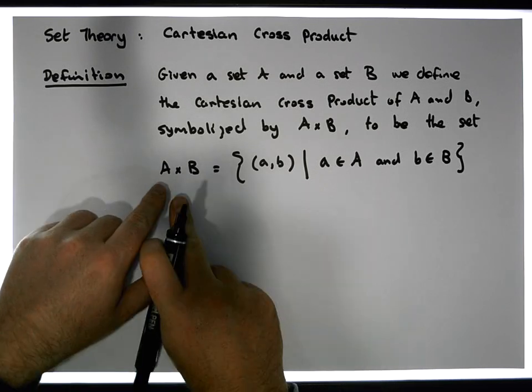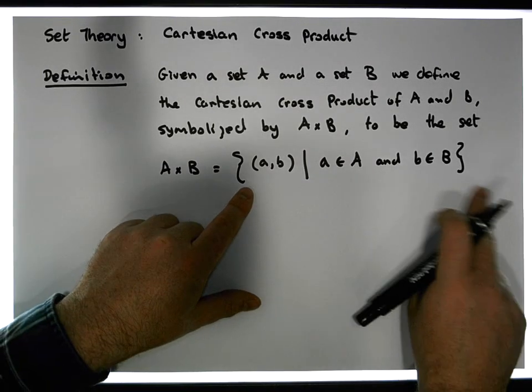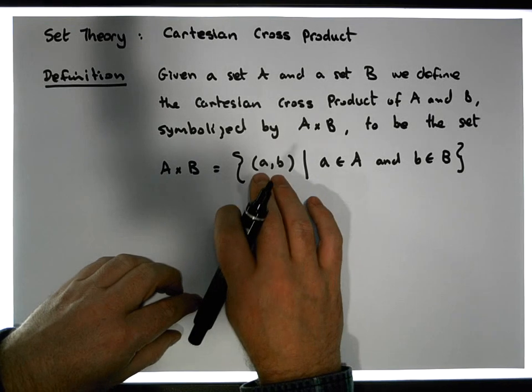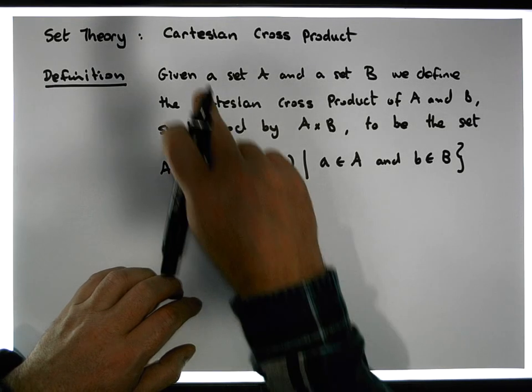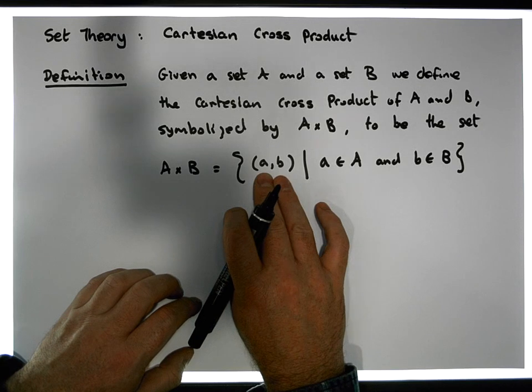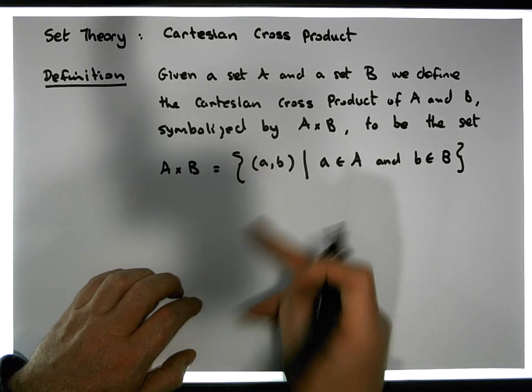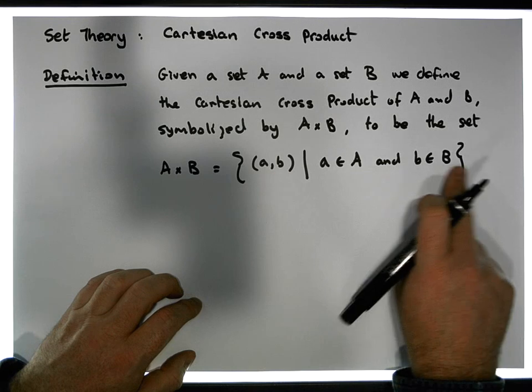So actually, this is the definition of the Cartesian product using set builder notation. The only things that are allowed in this set, this Cartesian cross product, are these ordered pairs, where the first entry of the ordered pair is taken from the set A, and the second entry of the ordered pair is taken from the set B.